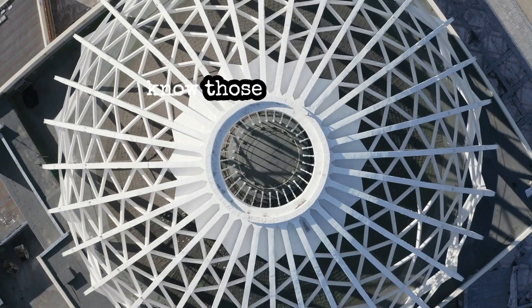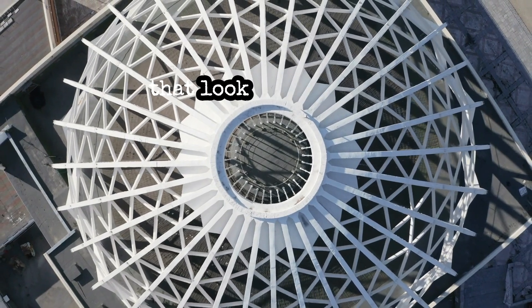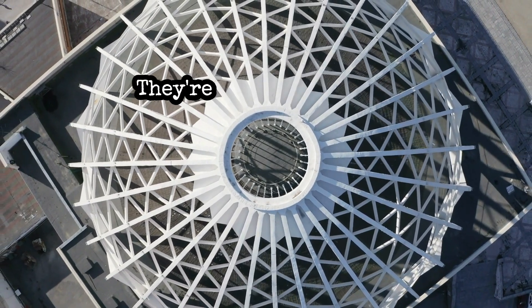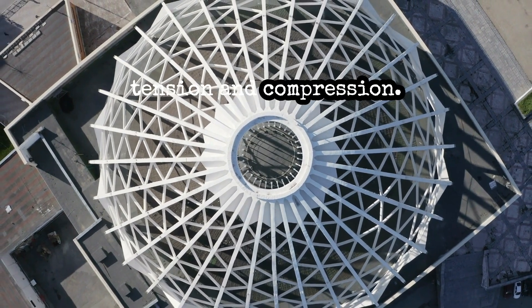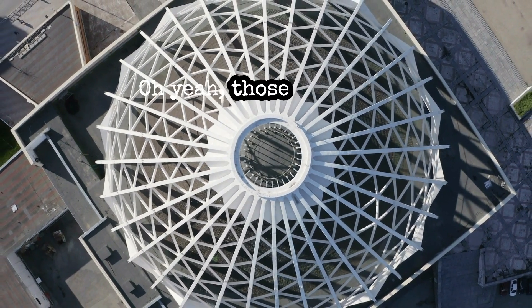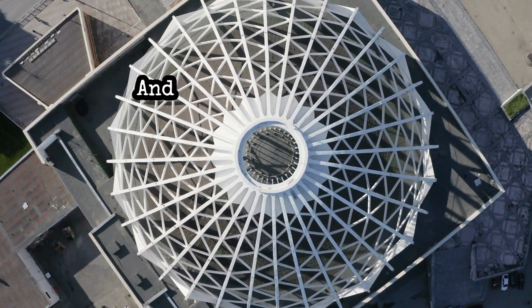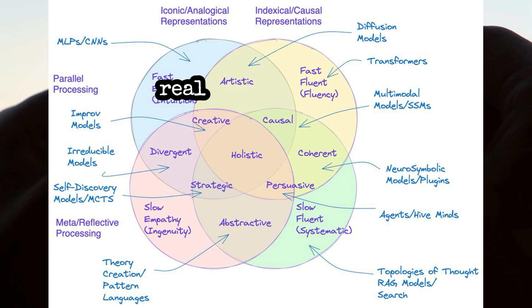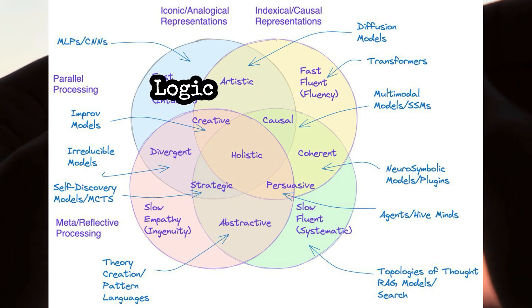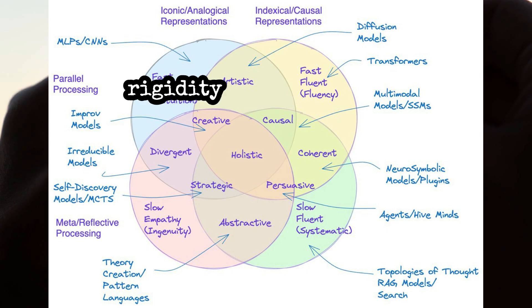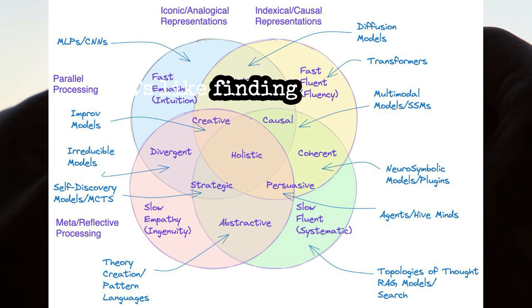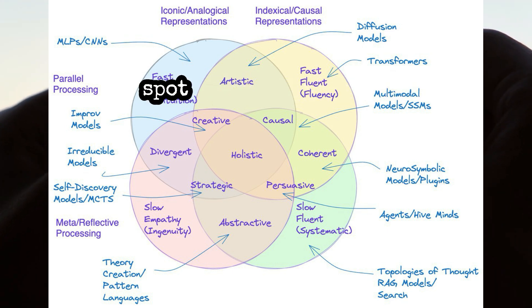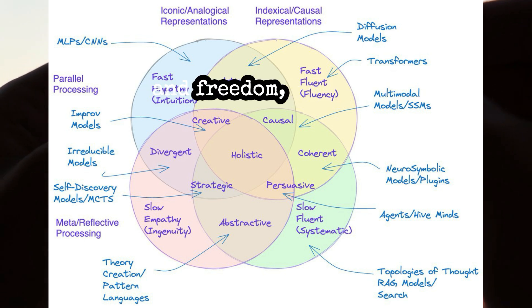Those sculptures that look like they're defying gravity, held together by a perfect balance of tension and compression. He's suggesting that real AI might need a similar kind of balance — logic and intuition, rigidity and flexibility, all working together. It's finding that sweet spot between structure and freedom.